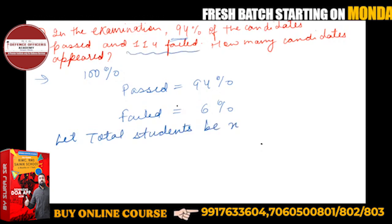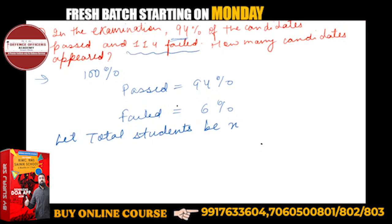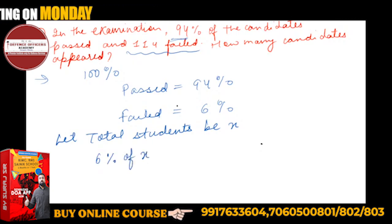So the field, let me tell you that 114 they are failed. So what do you do? 114 means 6%. It means 6% of x of total is equal to failed children. And how much is 114? So this is the equation.